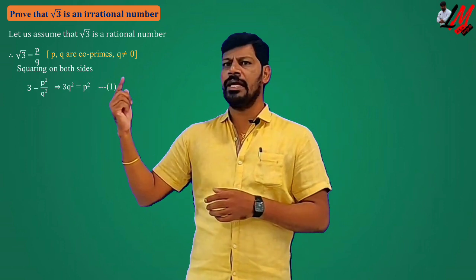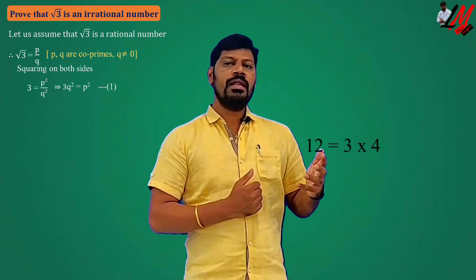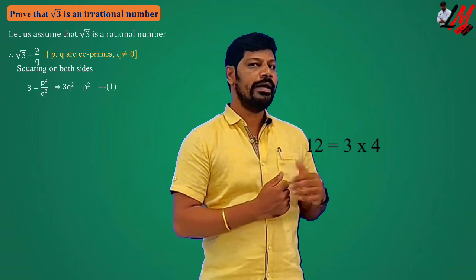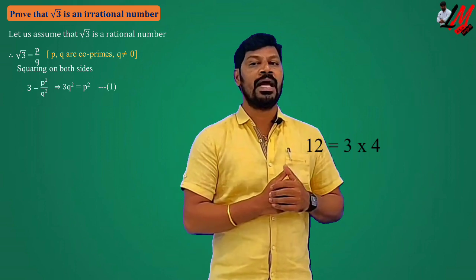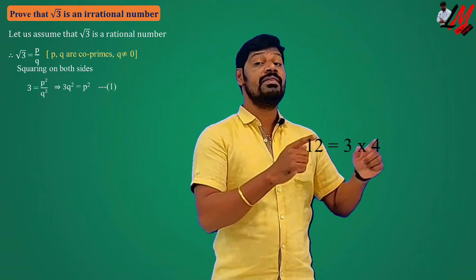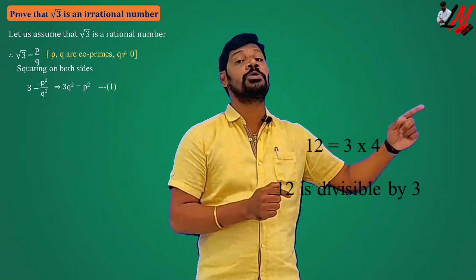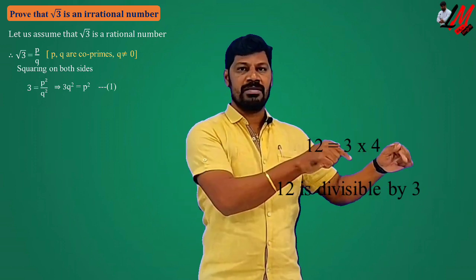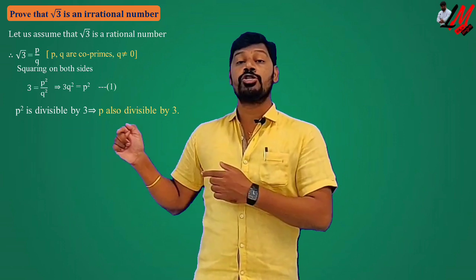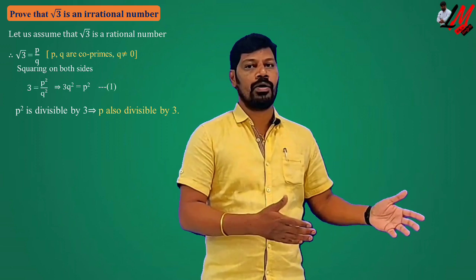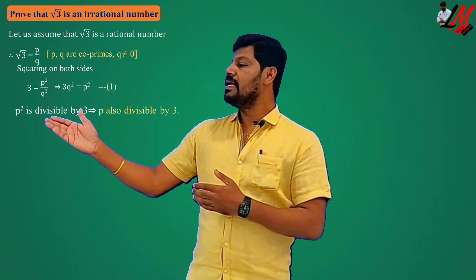Now, for example, take 12: we can write 12 equals 3 times something, which means 12 is divisible by 3. Similarly, since p² equals 3 times q², we can say p² is divisible by 3. That is what I am writing here: p² is divisible by 3, which implies p is also divisible by 3. We just discussed that if any prime number divides a perfect square it divides its square root also — same thing applies here, so p is divisible by 3.